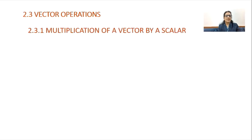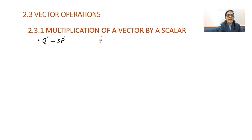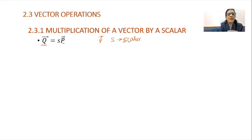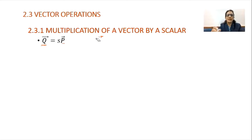The first operation is multiplication of a vector by a scalar. If we have a vector, we can multiply it by a scalar. We denote it as vector Q bar is equal to S into P bar. If P bar is the original vector and S is the scalar, then the new vector Q bar has the same direction as the original vector P bar, but its magnitude is S times the magnitude of P bar. This is a very simple first operation.